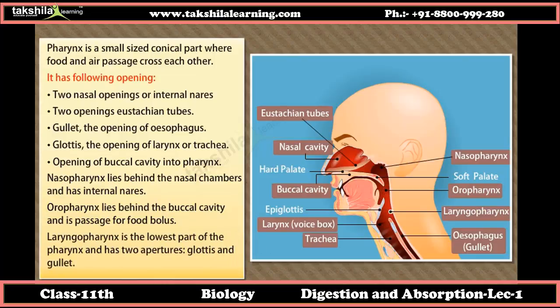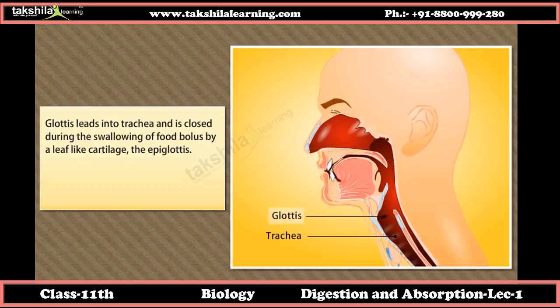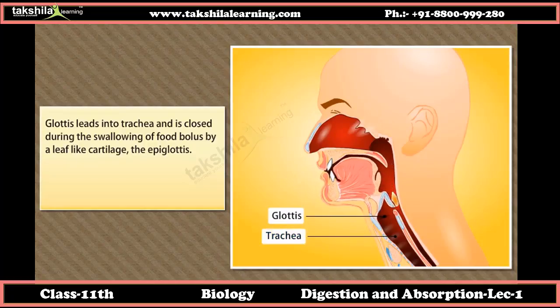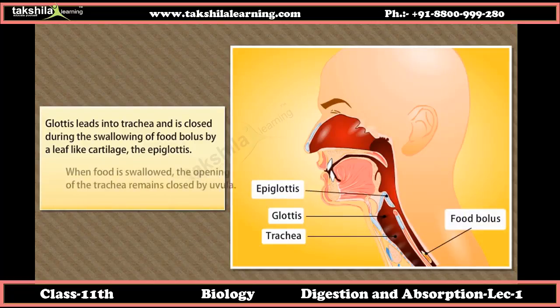The laryngopharynx is the lowest part of the pharynx and leads into the trachea. It is closed during swallowing of the food bolus by a leaf-like structure called the epiglottis. When food is swallowed, the opening of the trachea remains closed by the uvula.